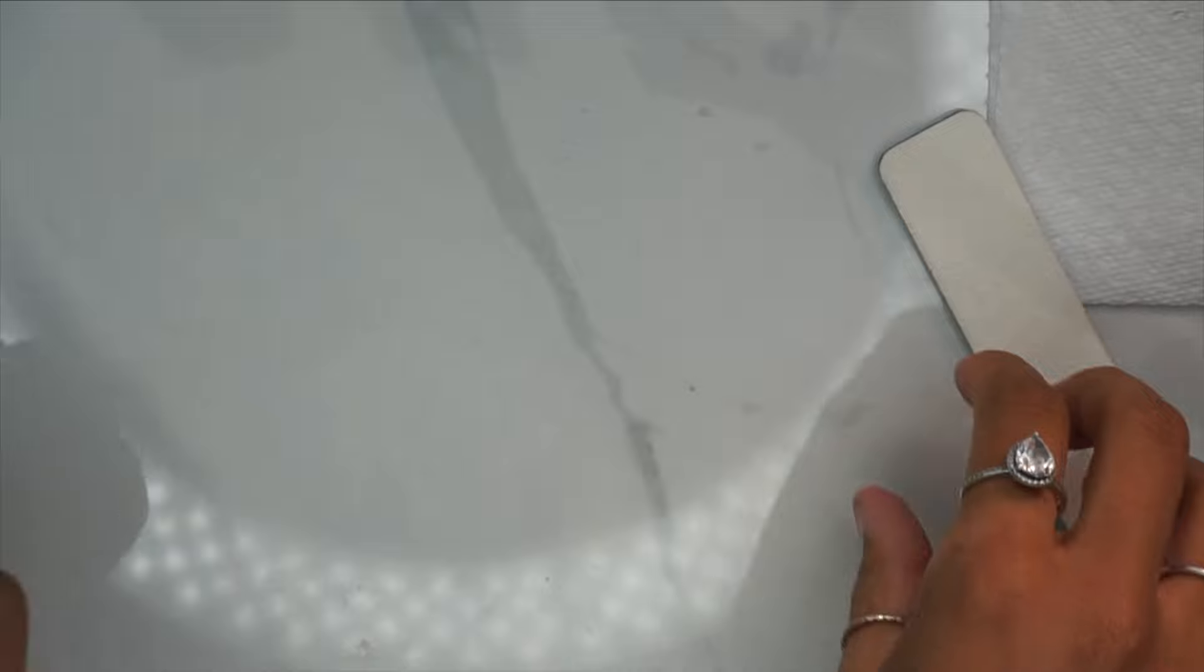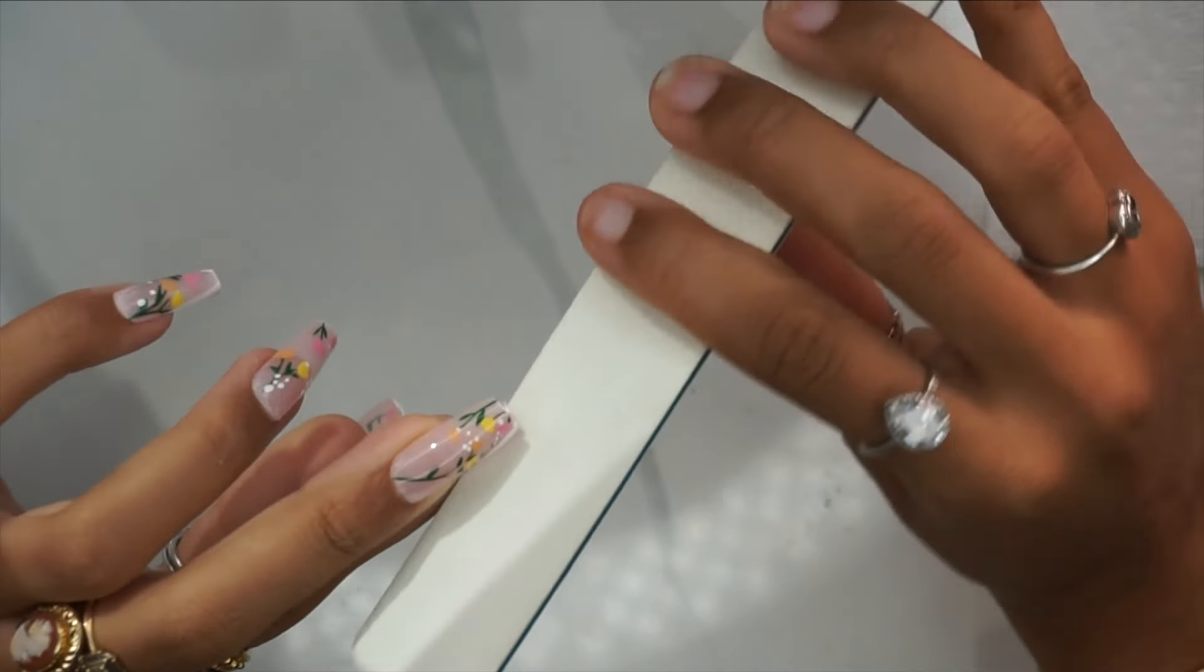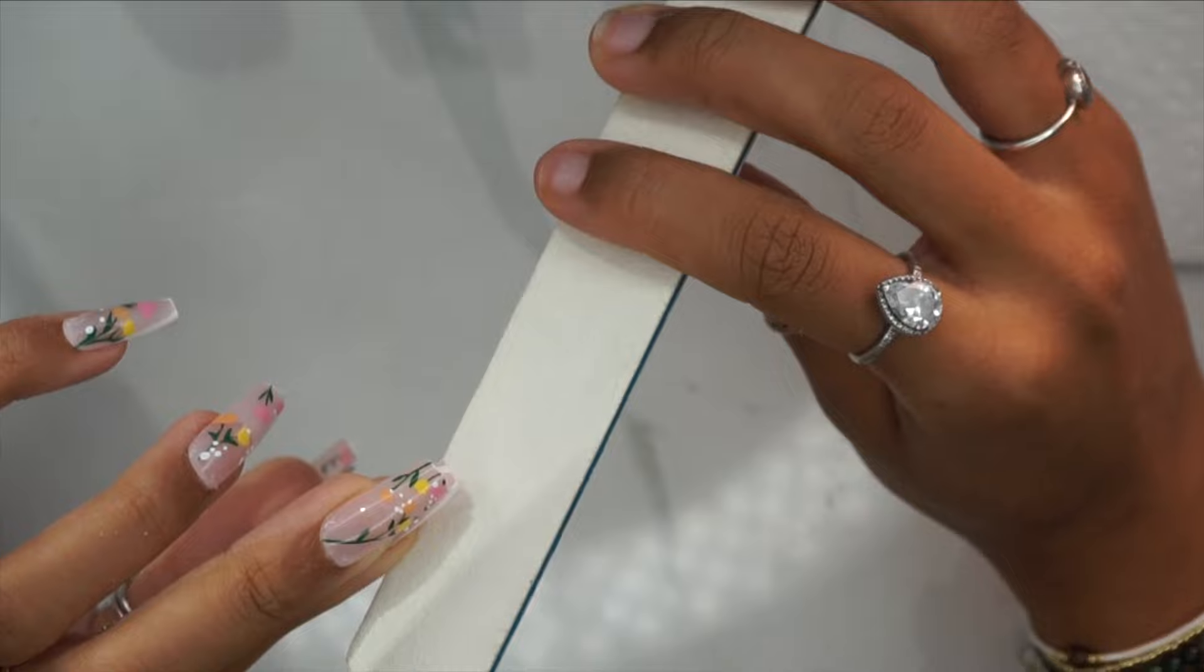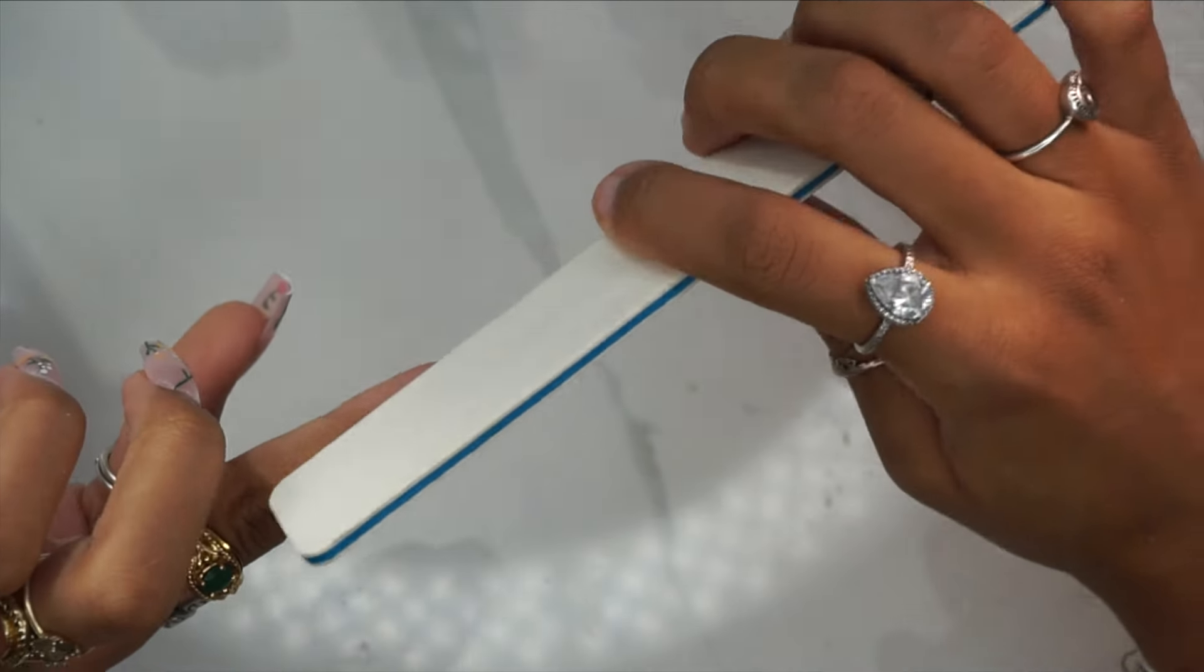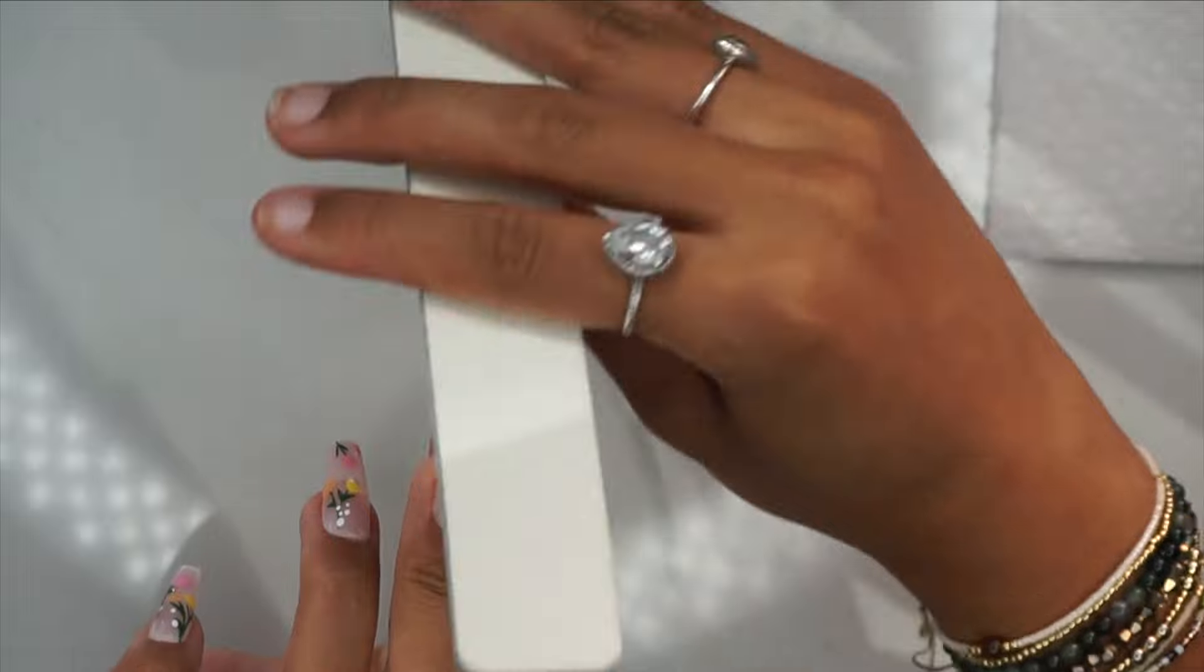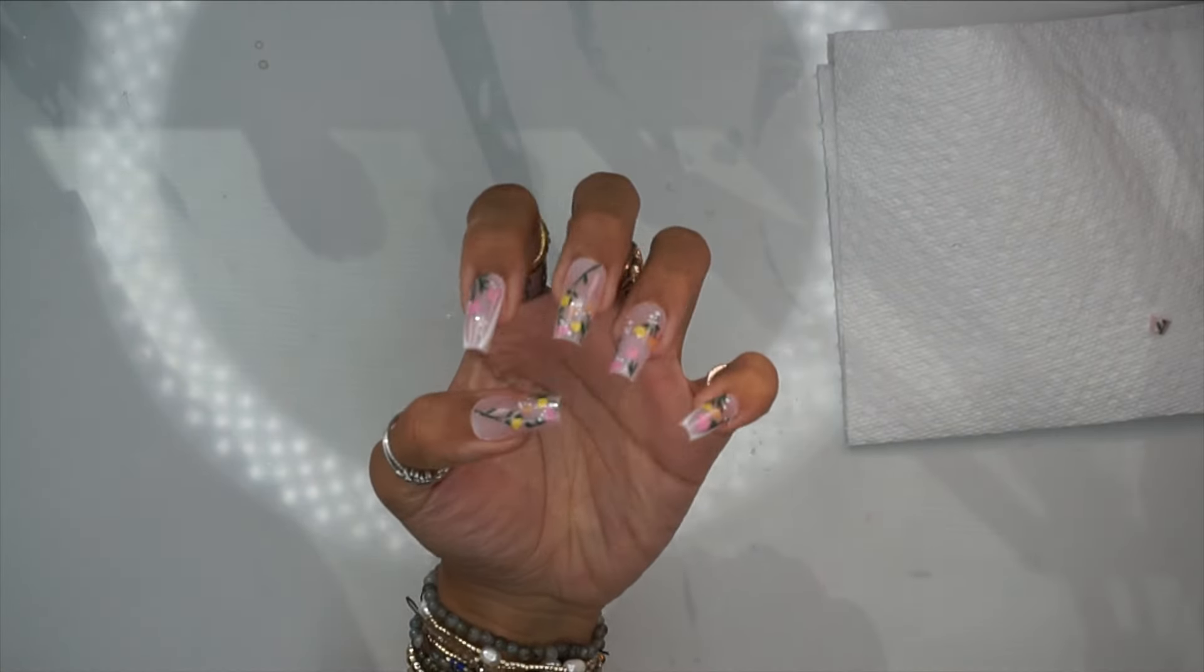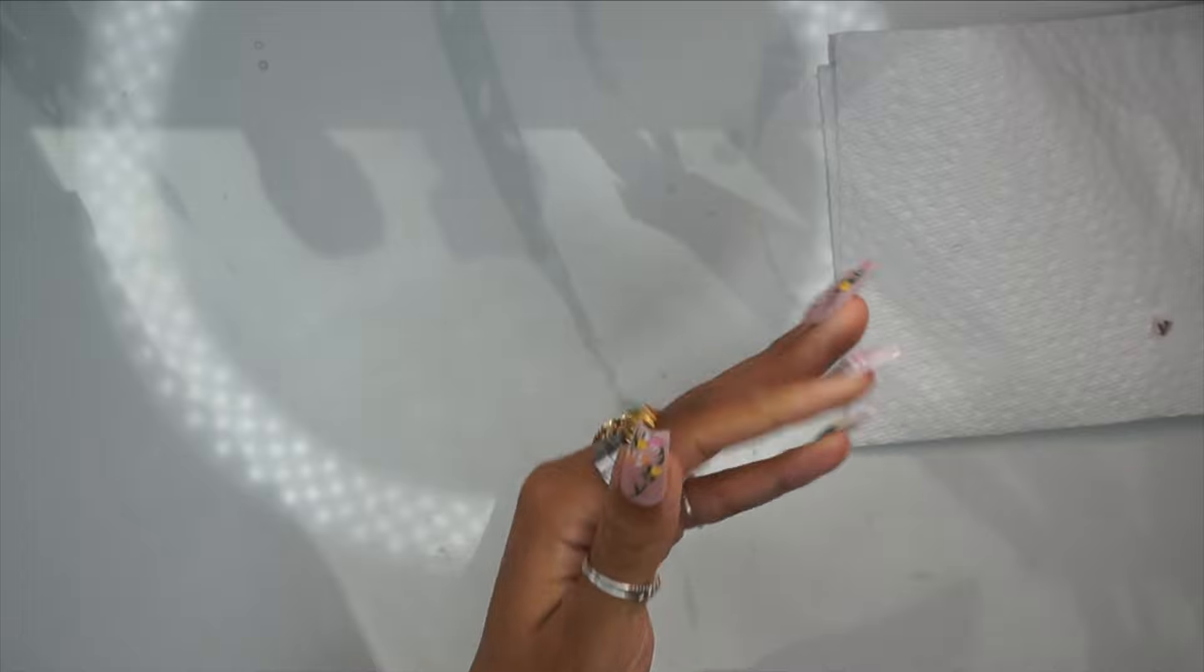Now we're going to go in and file. Definitely one of the most important steps into transforming any false nail or nail covers. You want to make sure that you're using a nice file. This is an 80-80 grit file purchased off of Amazon, and I'll be sure to have the link to them down below.